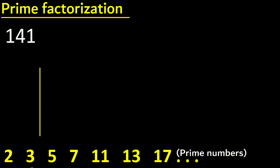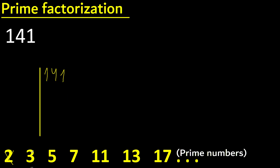Prime factorization. 141 cannot be divided by 2 because the last digit is not even. It can be divided by 3 because 1 plus 4 plus 1 is 6, and 6 can be divided by 3.